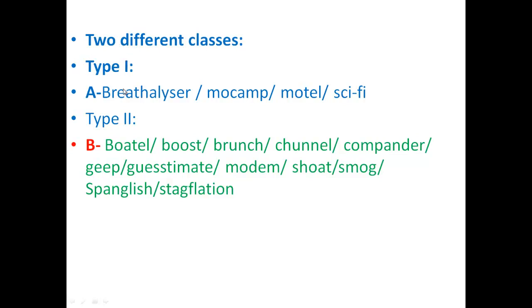As far as blends are concerned, we can identify two different classes or types. We have Type 1, exemplified by examples such as breathalyzer, mocamp, and motel. For example, breathalyzer is an analyzer of breath — a machine that analyzes breath to see the degree of alcohol in people's bodies. Mocamp is a camp where you can park your car or motor near your place where you live.